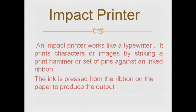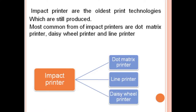An impact printer works like a typewriter. It prints characters or images by striking a print hammer or a set of pins against an inked ribbon. The ink is pressed from the ribbon onto the paper to produce the output. Impact printers are the oldest printing technologies still produced. The most common forms are dot matrix printer, daisy wheel printer, and line printer.